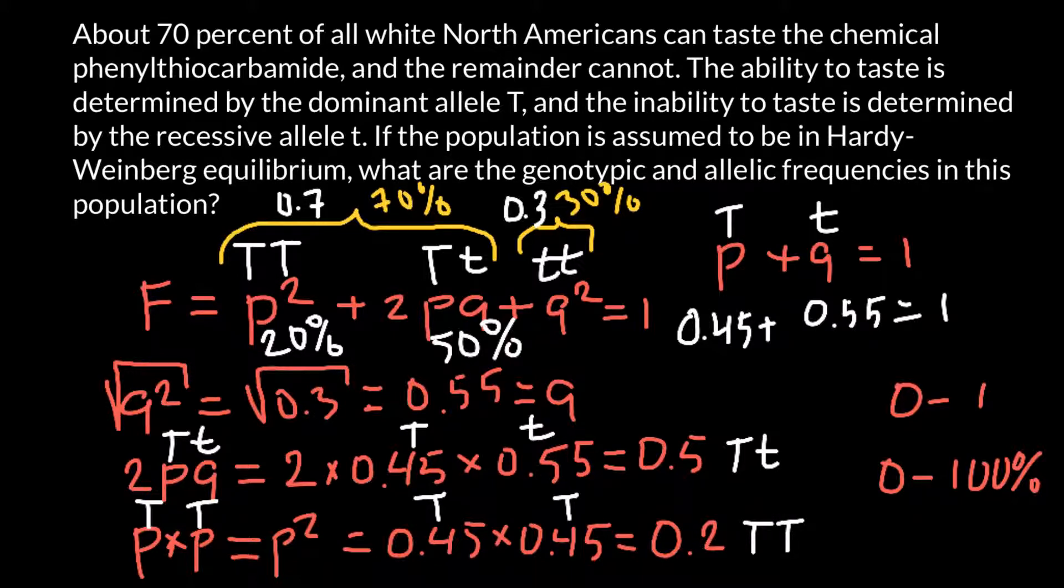We know that the homozygous recessive genotype is 30%. When we add all these numbers, 20 plus 50 plus 30, we are going to get 100%. And 100% on our scale of percentages would equal 1, just like in our formula. Now we have the frequency of all three genotypes.